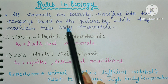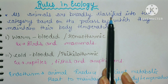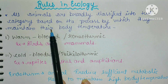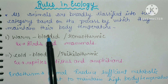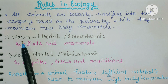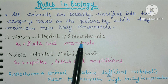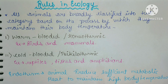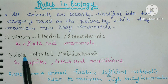All animals are broadly classified into two categories based on the process by which they maintain their body temperature. First, warm-blooded animals — they are called homeothermic. And cold-blooded animals — they are called poikilothermic.